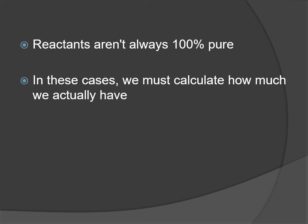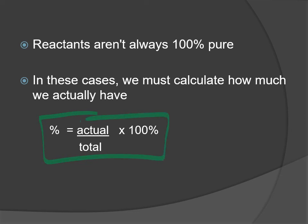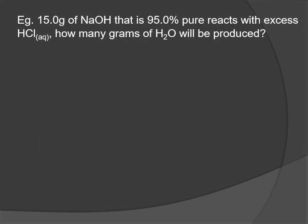If you know you have 10 grams of some reactant but it's only 90% pure, then you don't actually have 10 grams of the substance — it weighs 10 grams but only 9 grams is that compound. You can do that percent calculation: portion over the whole, actual over total. For example, if we had 15 grams of sodium hydroxide that is only 95% pure, we don't actually have 15 grams of sodium hydroxide — some of it is something else.